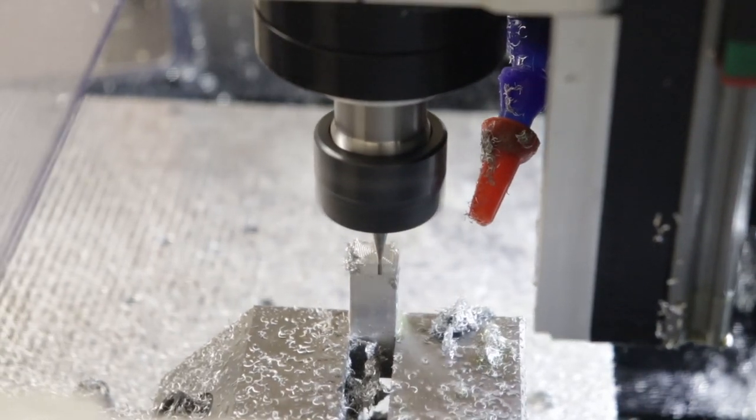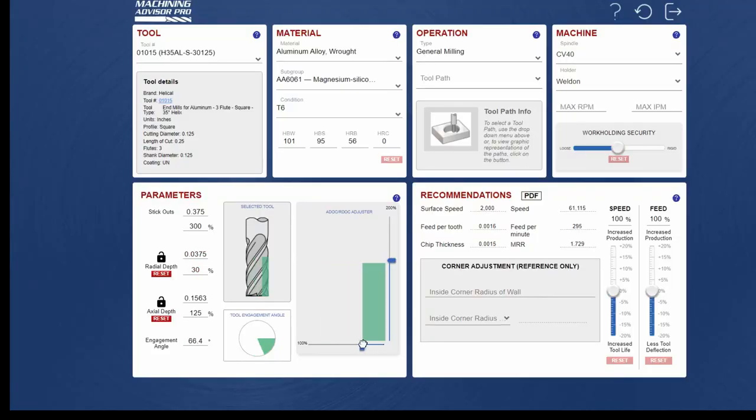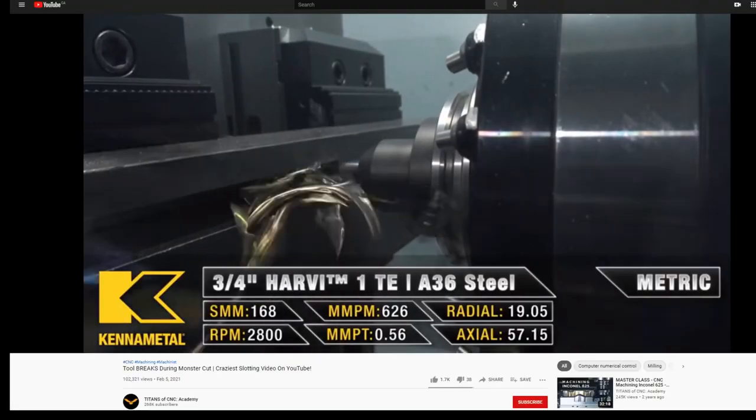That's the first set of things you need to determine which you find out mathematically. The next set is the width of cut or step over and the depth of cut or step down, which is not determined mathematically. These two parameters have nothing to do with the speed and feed, but instead have everything to do with your machine's available power and rigidity.